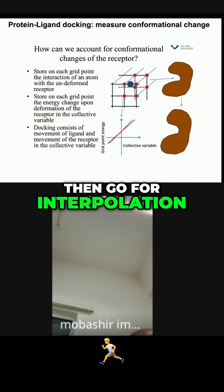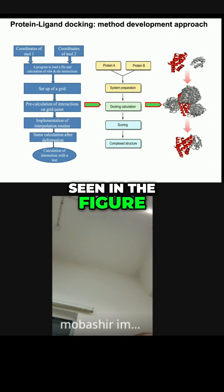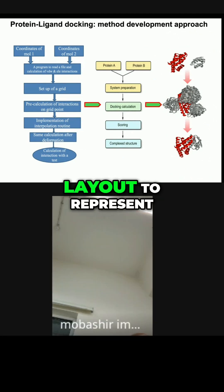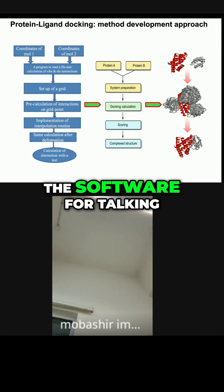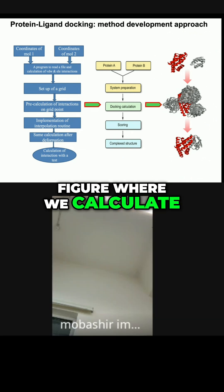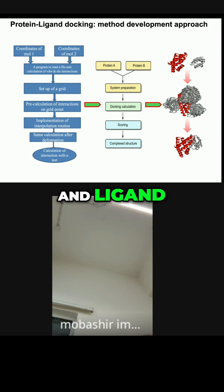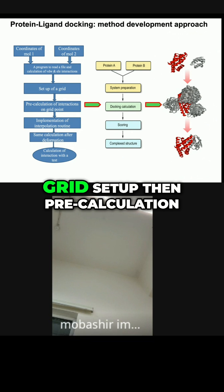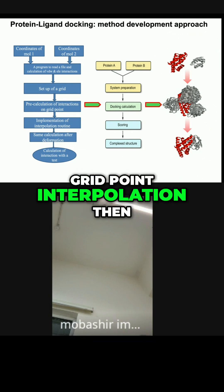Then go for interpolation each time, as can be seen in the figure. This is the figure or layout to represent both cases when you are developing the software. This is the left side figure where we collect the coordinates of both the molecules — proteins and ligand — using the program, then go for grid setup, then pre-calculation of interactions for each grid point, then interpolation.